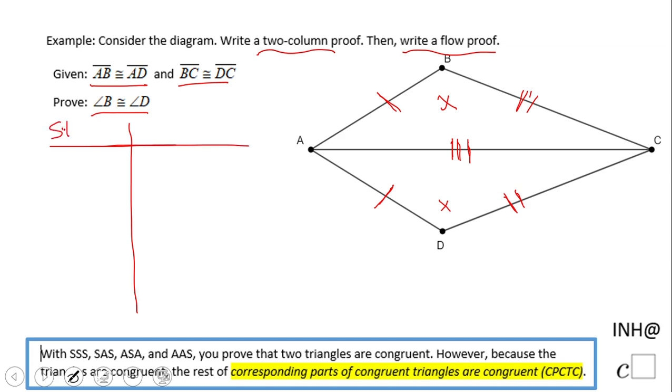Statements, reasons. And always start with what is given. So in this case we can start with AB congruent to AD, and this is given. And then we can write the second statement that is given, which is BC congruent to DC. You can even switch them. Given again.